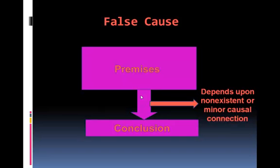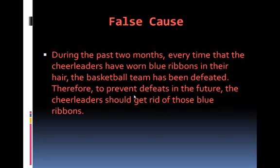A false cause is when the premises have only a minor causal connection with the conclusion. For example: during the past two months, every time that the cheerleaders have worn blue ribbons in their hair, the basketball team has been defeated. Therefore, to prevent defeats in the future, the cheerleaders should get rid of those blue ribbons.